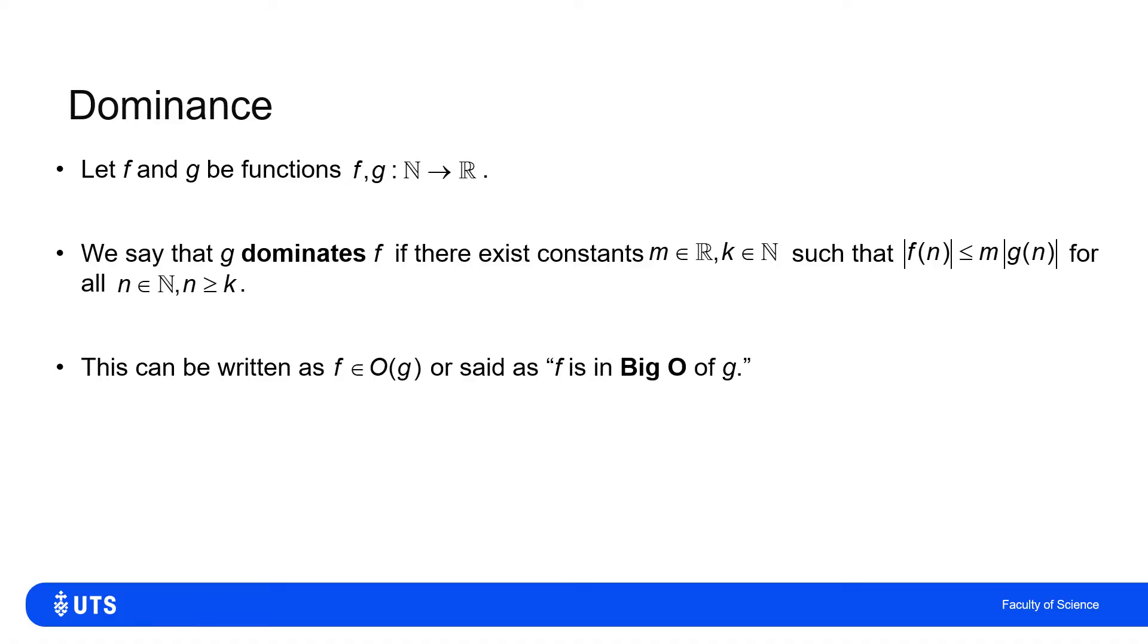And we say that it means that f is in big O of g, and we write that as f belongs to this set big O, which is a function of the function g. So big O of g is the set of all functions between the natural numbers and real numbers which are dominated by g. So f belongs to big O of g because f is dominated by g.